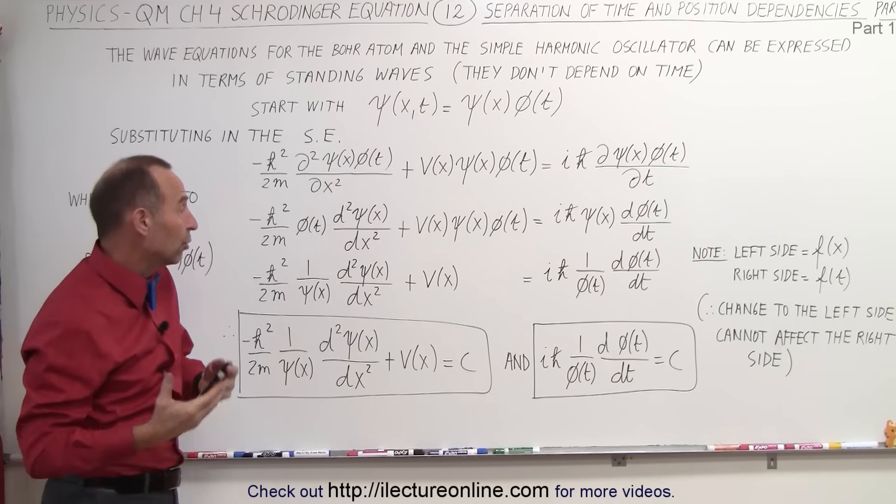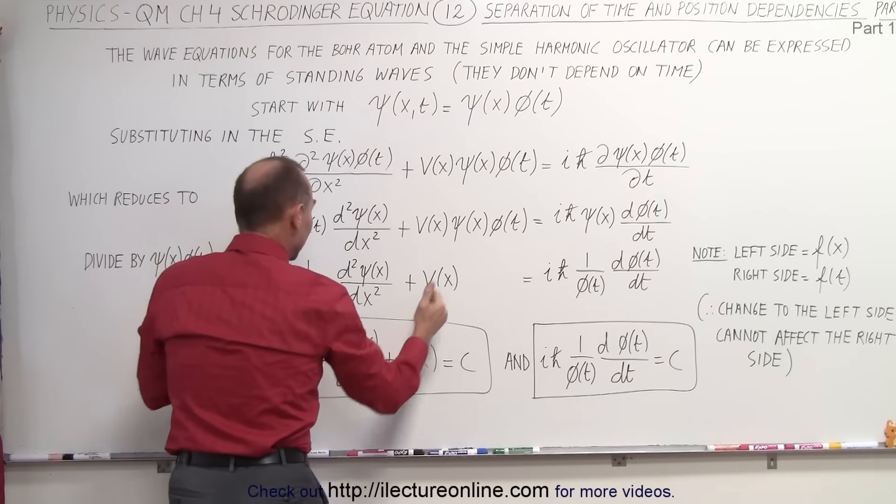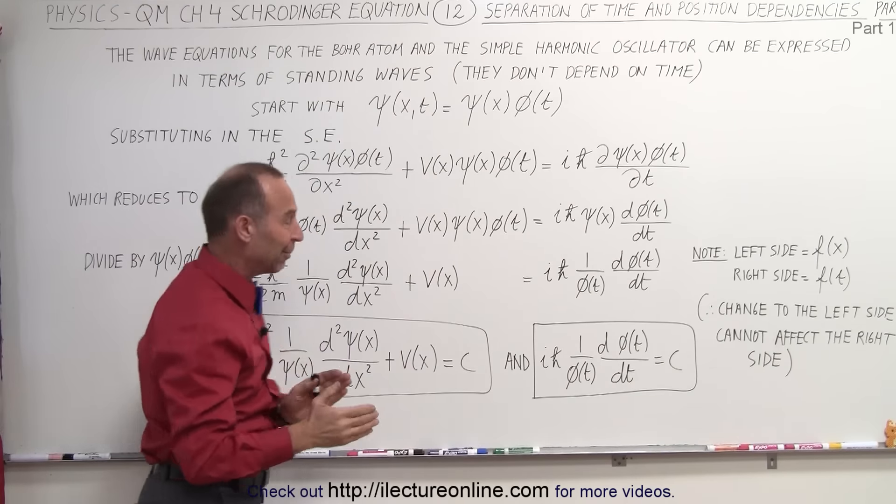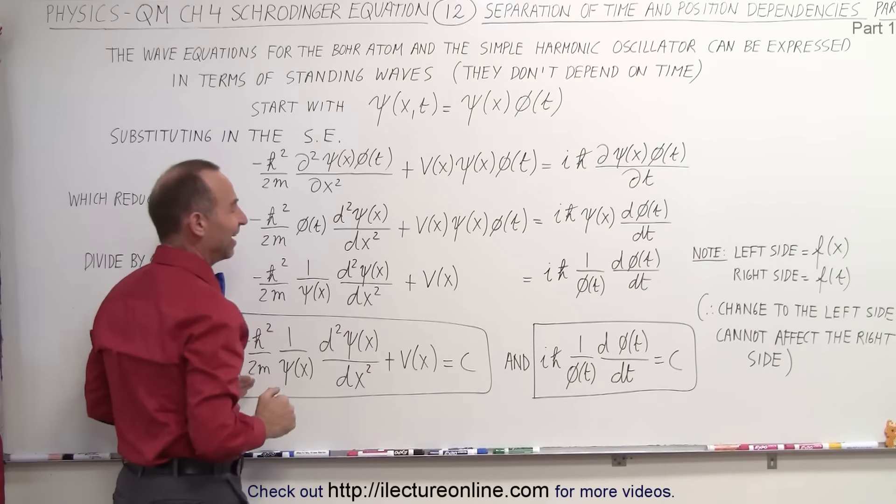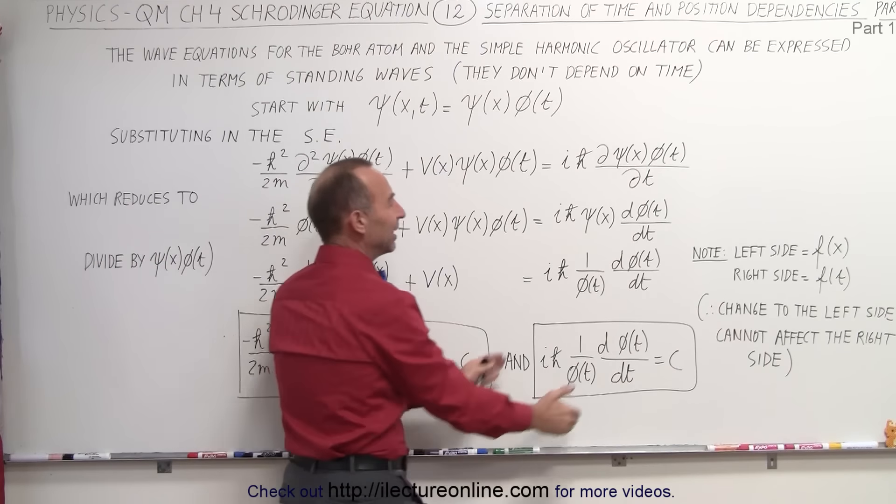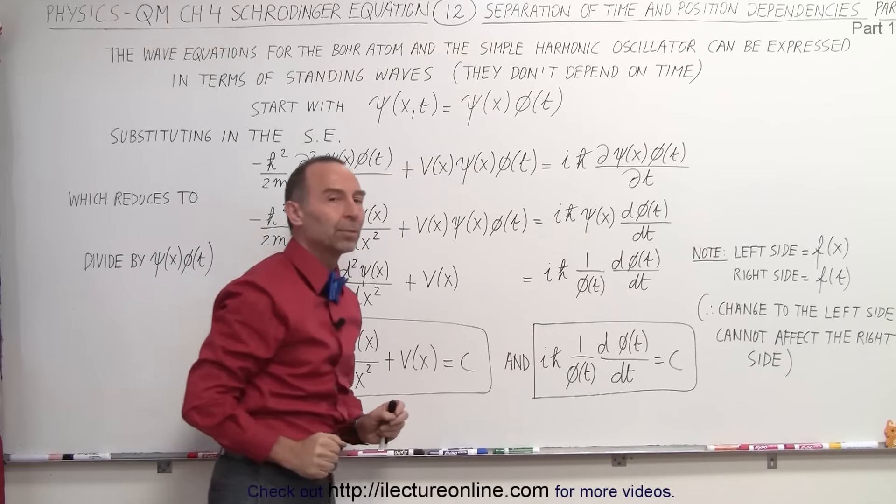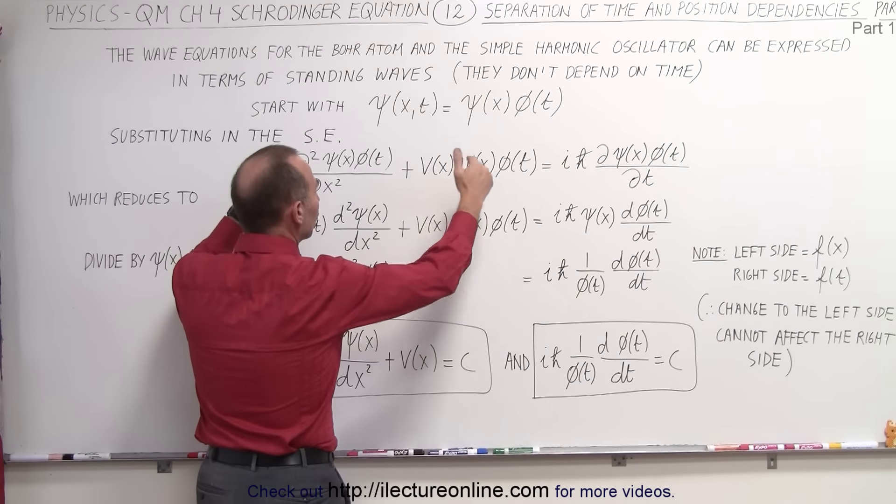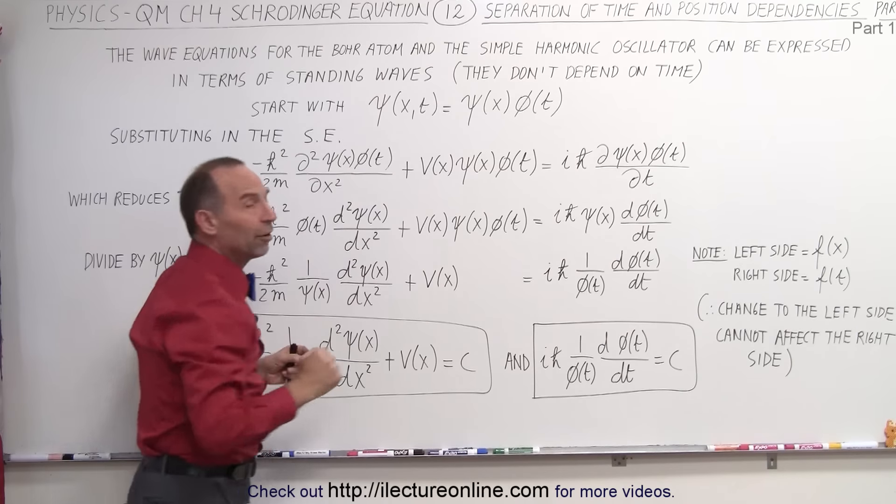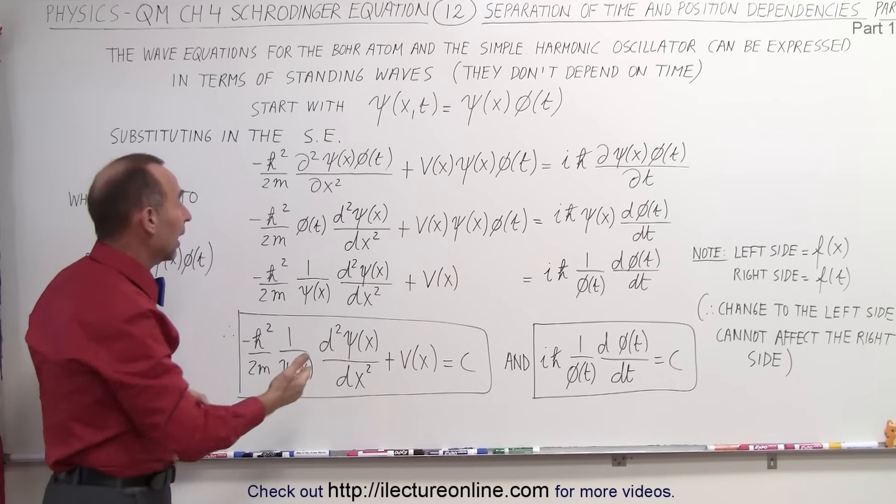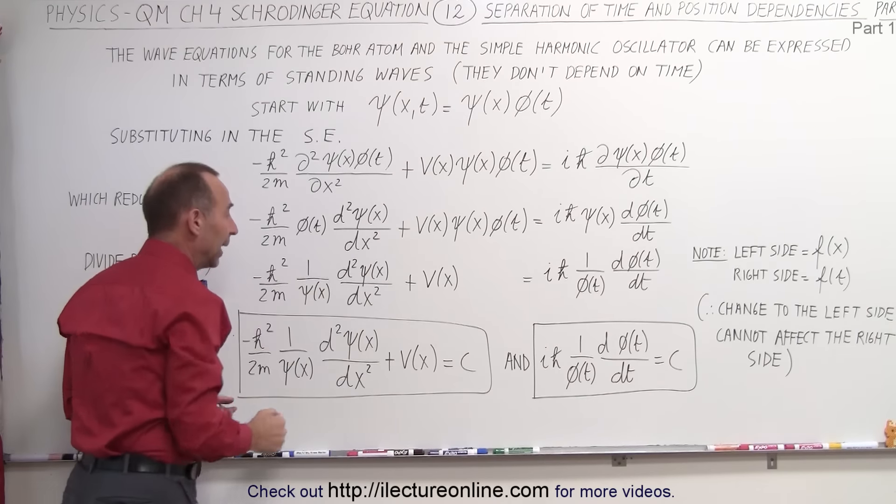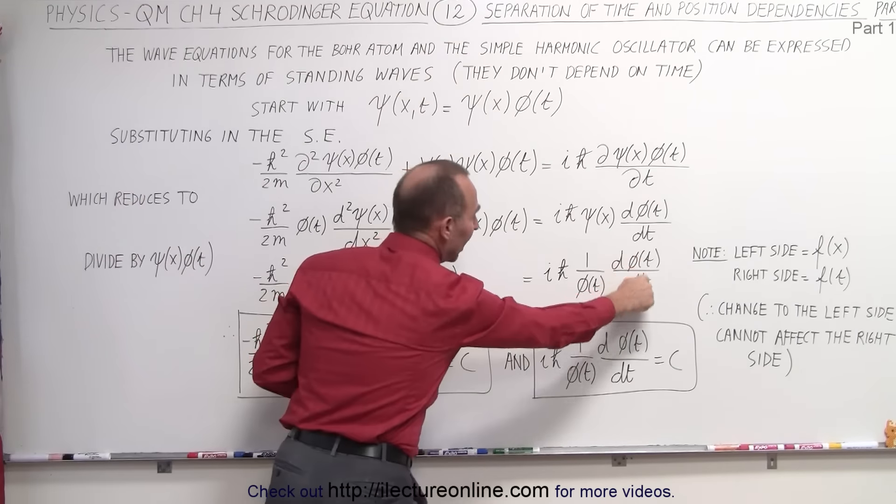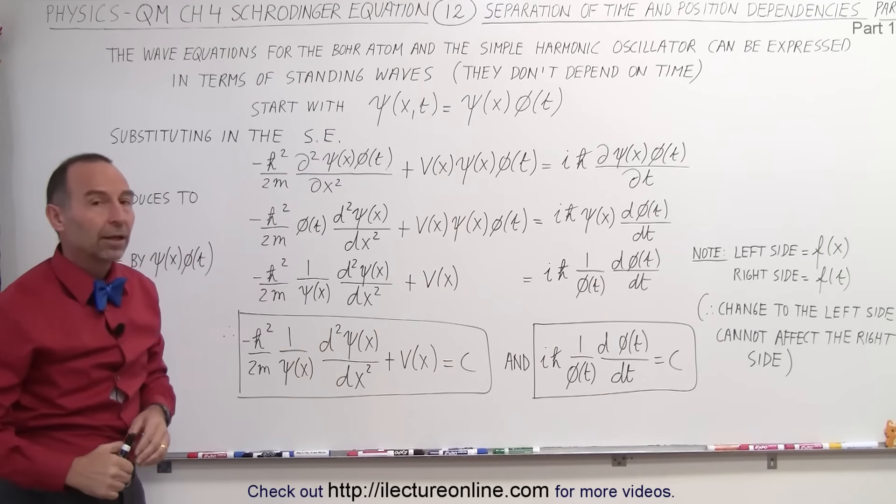Let's call it C, which means we can write the right side equal to the constant. We can take the left side and set it equal to C, and we can take the right side of the equation and set it equal to C. Now, also notice our partial differentiation turns into normal differentiation because it's only dependent on the single variable x. So we take the derivative of x with respect to x, and the derivative of time with respect to time.